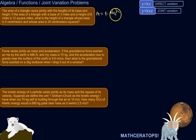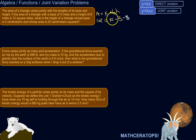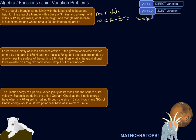Area is some constant times base times height. For this particular triangle, we've got an area of 12 square miles. So 12 is equal to some constant times the base of three miles and the height of eight miles. We can use that information to figure out what the constant is. Three times eight is 24, so 12 is equal to k times 24. We can see that 12 is one half of 24, so k is equal to one half — which probably looks pretty familiar.